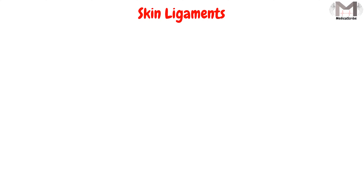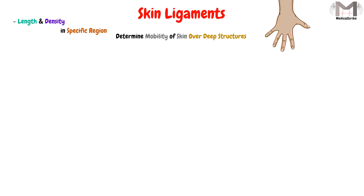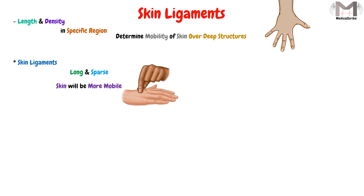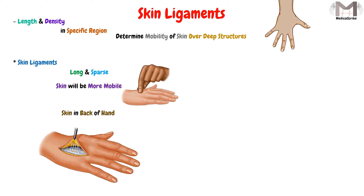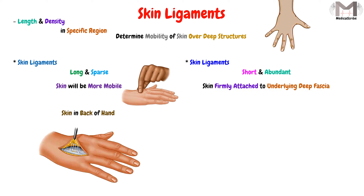The length and density of the skin ligaments in a specific region will determine the mobility of the skin over the deeper structures. Where the skin ligaments are longer and sparse, the skin will be more mobile and can move freely, such as the skin on the back of the hand. Where the ligaments are short and abundant, the skin will be firmly attached and less mobile, such as in the palms and soles.